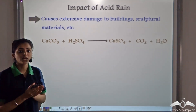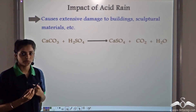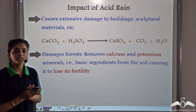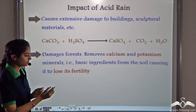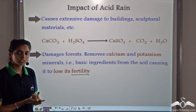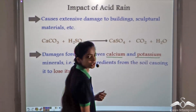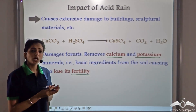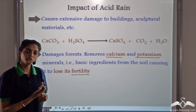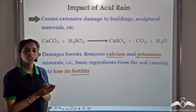Another detrimental impact of acid rain is that it affects soil fertility. When acid rain enters the soil, it removes important minerals like calcium and potassium, which are very important for enriching soil fertility. As these are removed by nitric acid and sulphuric acid, the soils lose their fertility.